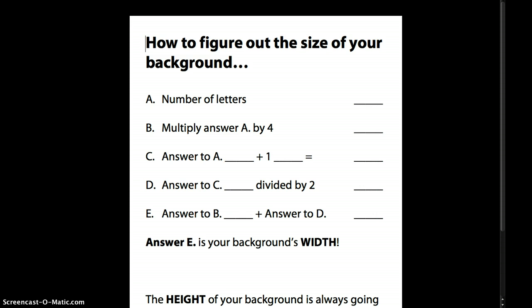Then what you're going to do is step letter B and you multiply the number of letters by 4. So let's say that you have 7 letters and then you multiply it by 4 and you're going to get 28.